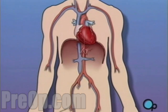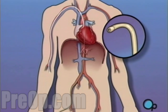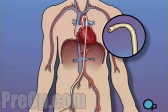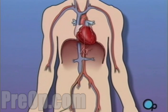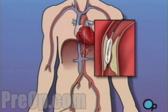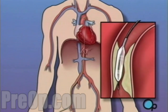During a balloon angioplasty, a heart specialist will insert a thin tube into the artery in your arm or leg and gently guide it towards the problem area in your heart. Once the tube is in place, a small balloon is briefly inflated in order to widen the narrowed artery.